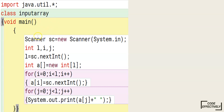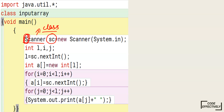After this I have created an object of Scanner class so that we can take input from the user or from the keyboard. Scanner is the name of the class, that is why it starts with a capital S. 'new' is a keyword used for object creation, and System.in indicates that we will be reading characters from the keyboard.